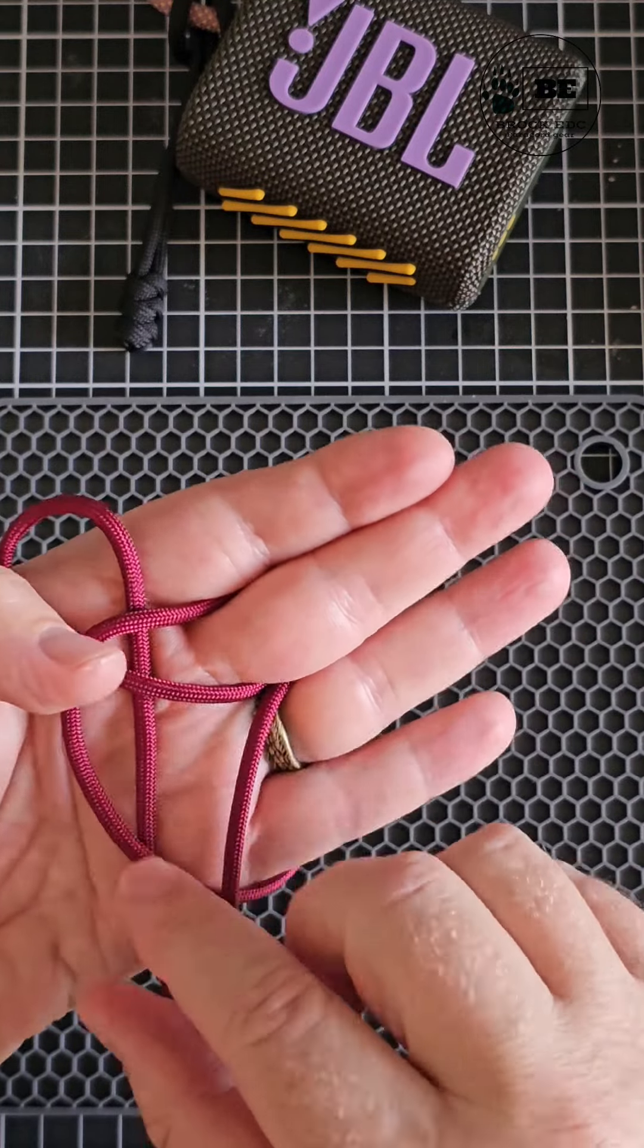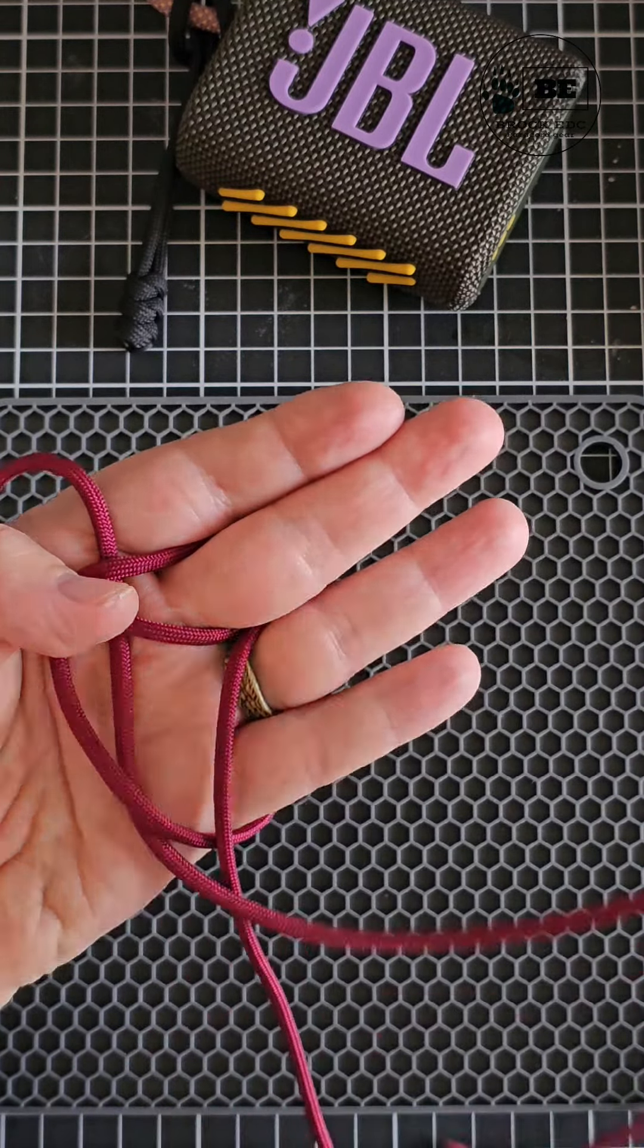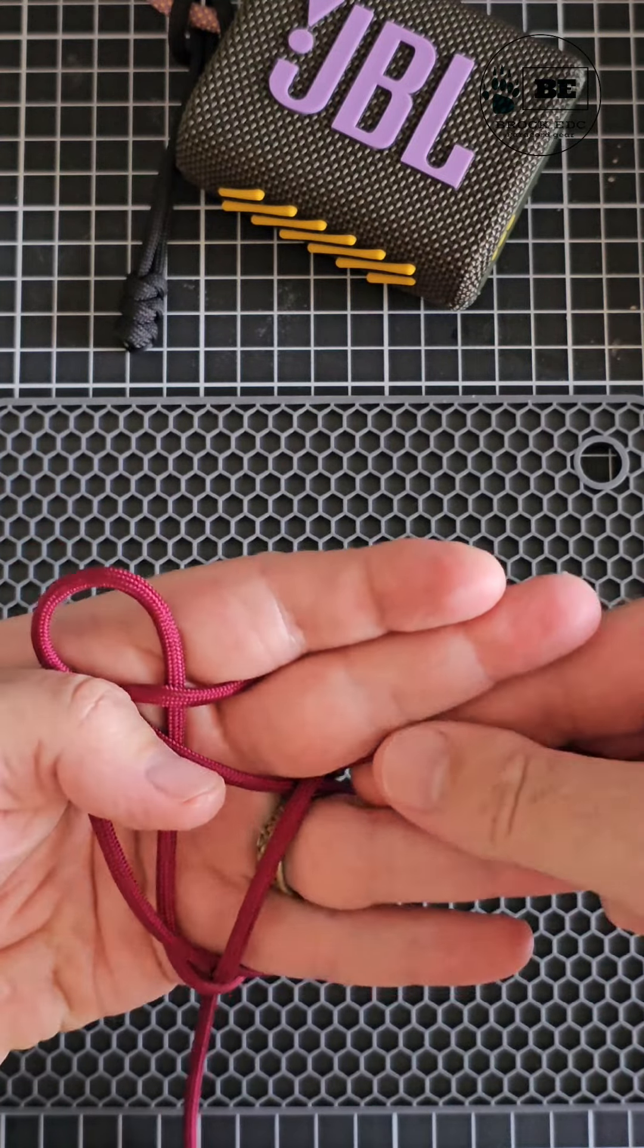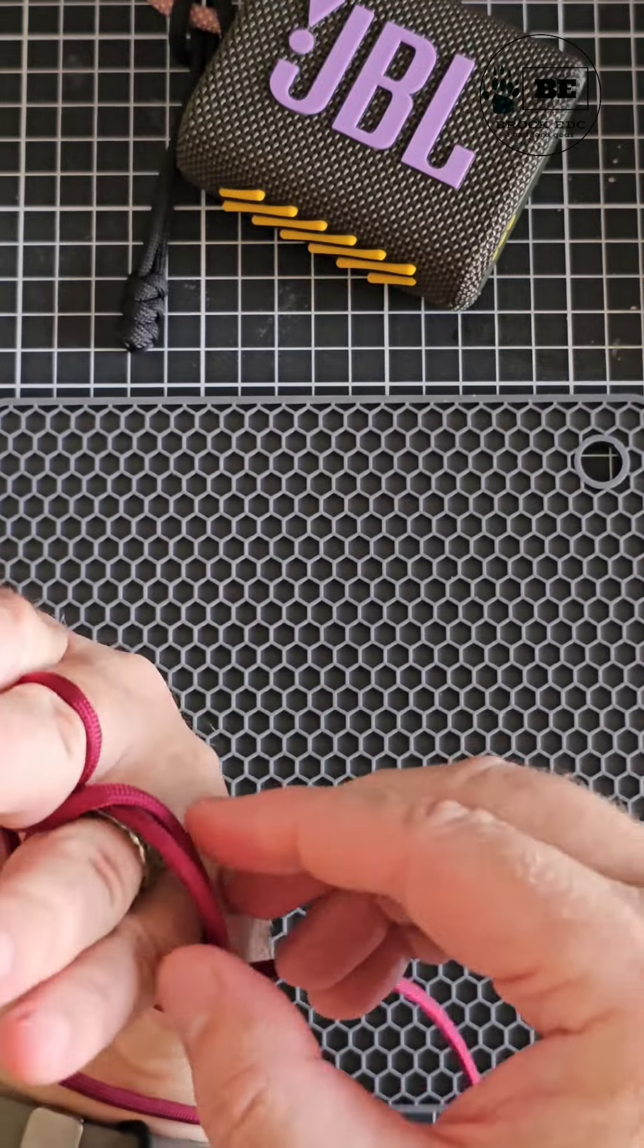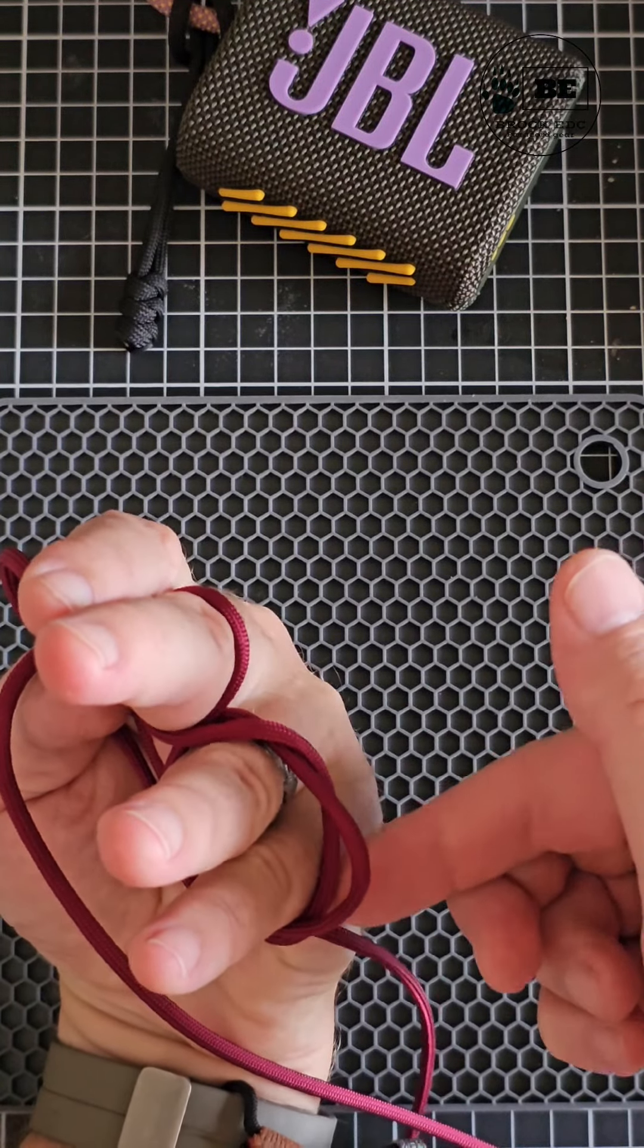The standing end will now become the working end and again you're going to bring that around the back of the fourth and third finger and outwards. You're after this effect so the original loop remains the one that sticks out slightly.